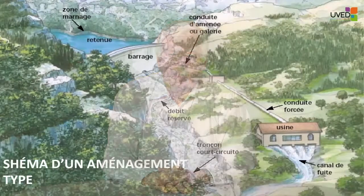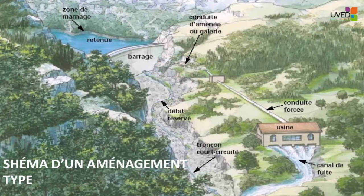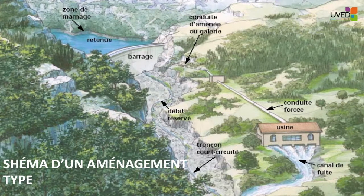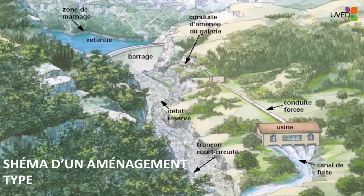The graph on the screen is the standard layout for a hydraulic power plant. We're going to detail the drawing. We see the dam — this is the essential component of a hydraulic power plant. The dam is across the river and it creates a lake.